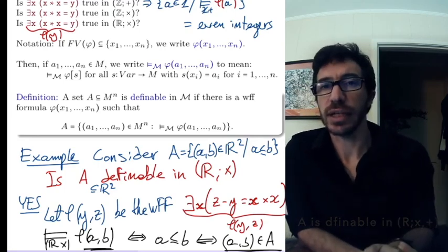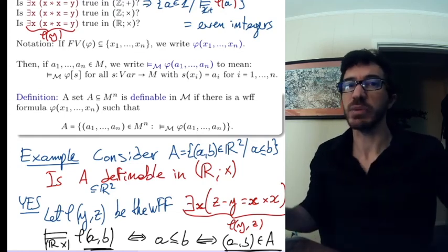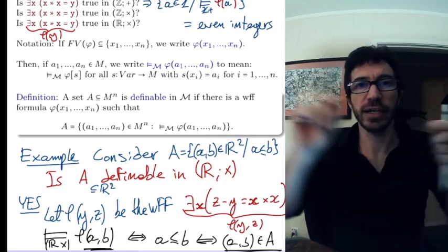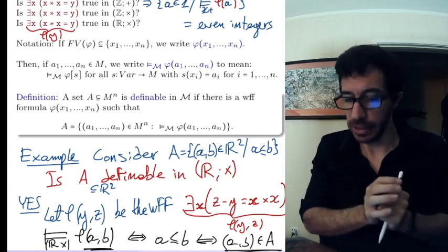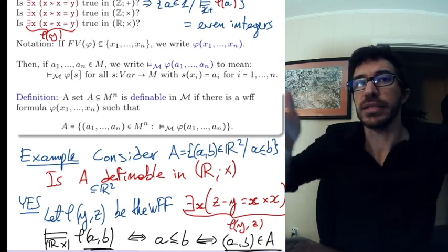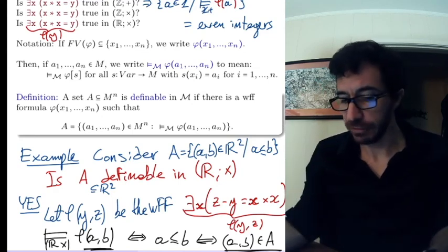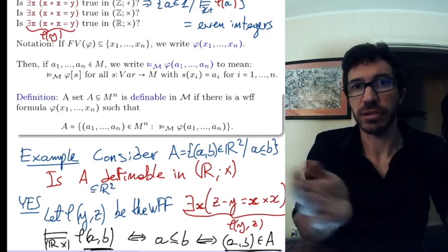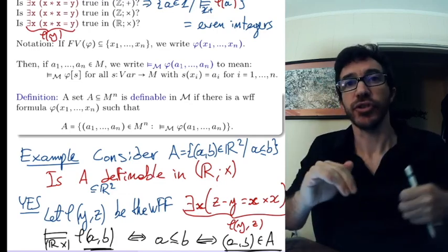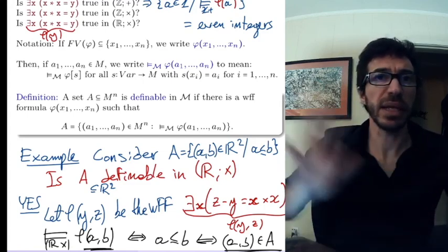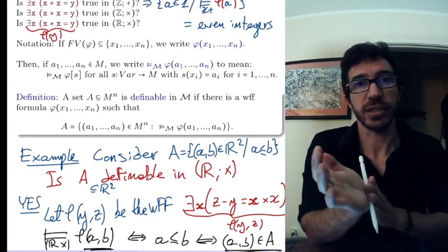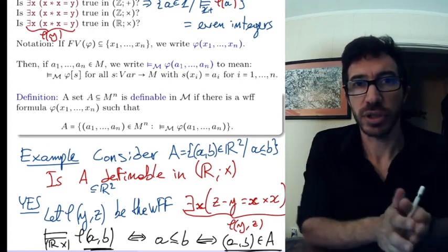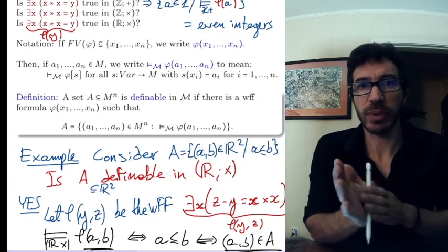We don't have the tools yet to prove that something is not definable, but we'll have them soon. There are many sets that are not definable: to define a set you need to explicitly write a formula, and a formula is just a finite string of characters, so there are only countably many formulas. But there are uncountably many subsets of the integers and even more of the reals, so most sets cannot be defined. We'll see later how to prove specific things are not definable, which is important whenever you're doing mathematics and working with relations defined within your structures.